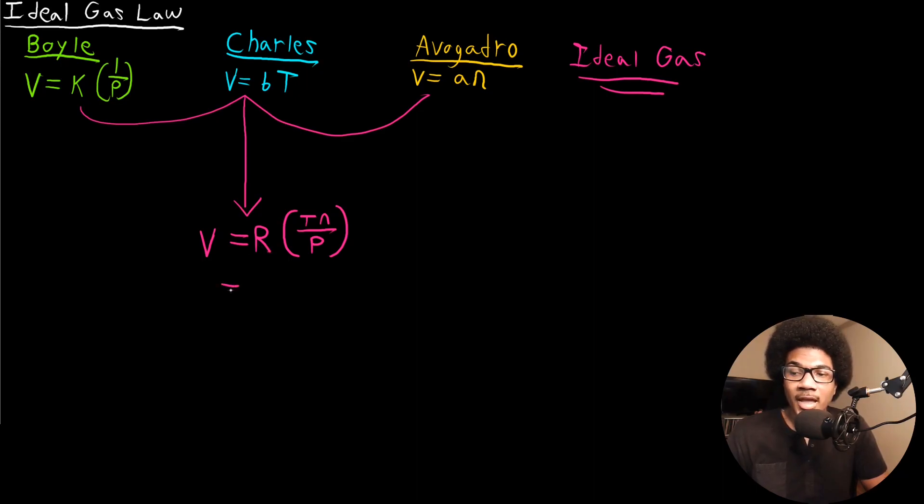The direct proportionality of volume to temperature and the number of moles, the inverse proportionality between pressure and volume. If you've seen the ideal gas law before, you're probably more familiar with seeing it in the following form where it says PV is equal to NRT. This is just a rearrangement of this equation.